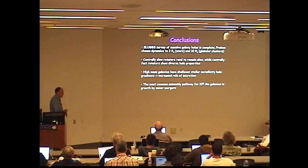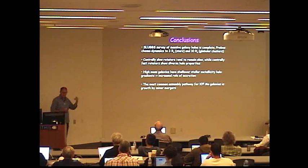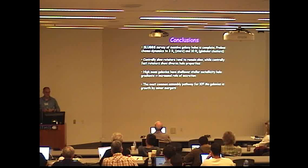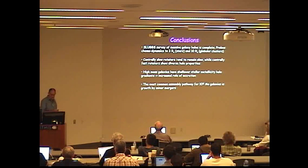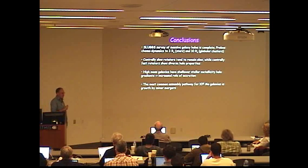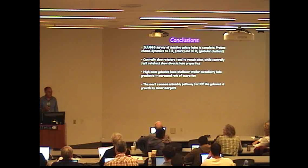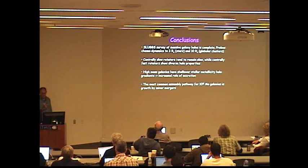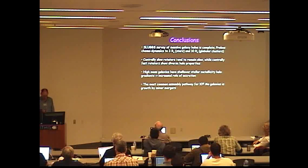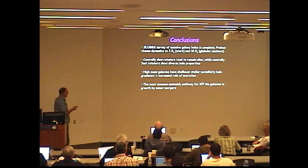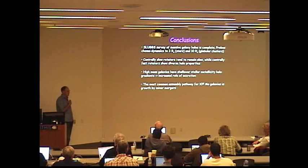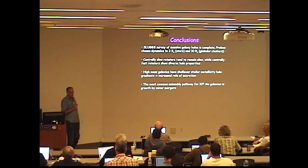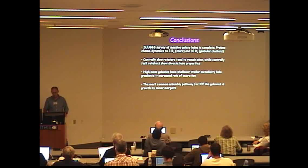In conclusion, talking about the SLUGS survey, we've been looking at the halos of massive galaxies and we've been probing their chemodynamics out to three effective radii with the starlight directly and then out to about 10 effective radii with the globular clusters as a proxy for the halos. I showed you that centrally slow rotators tended to remain slow as we probed further out in radius, but the fast rotators had quite a diversity of specific angular momentum profiles as we went further out. High mass galaxies have shallower stellar metallicity halo gradients, and that's probably a signature that they have had more ex situ stars or an increased role of accretion in the formation of their halos relative to the low mass galaxies.